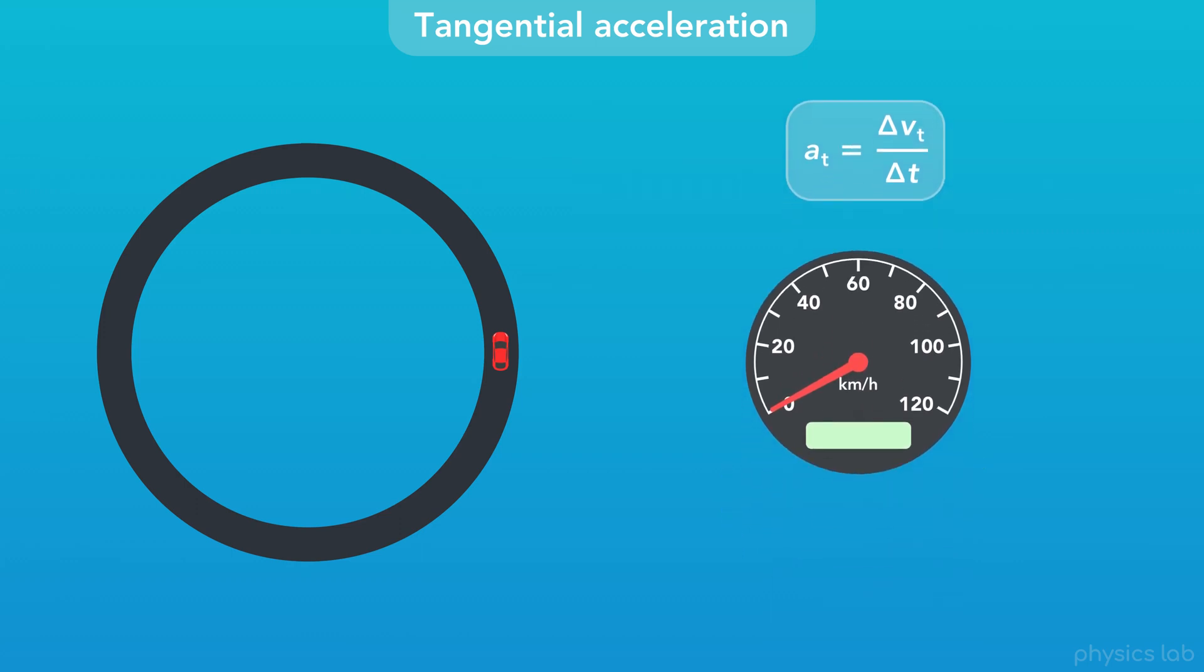Let's try calculating tangential acceleration. This car starts with 0 velocity and then accelerates around the circle. Over 10 seconds, the car's velocity changes from 0 meters per second to 8 meters per second, about 29 kilometers per hour. The tangential acceleration would be the change in velocity, 8 minus 0 meters per second, over the period of time, 10 seconds.